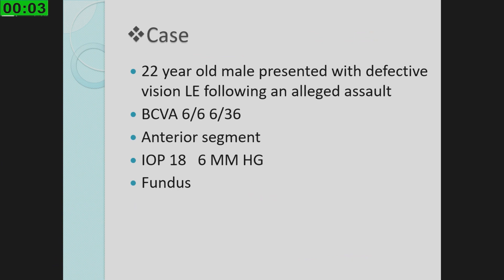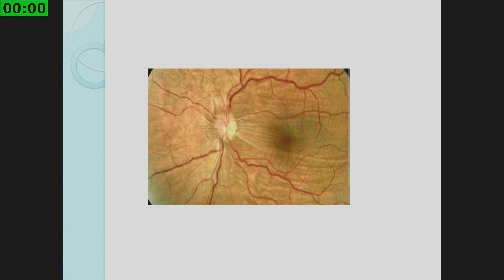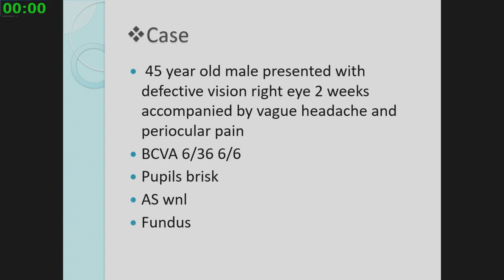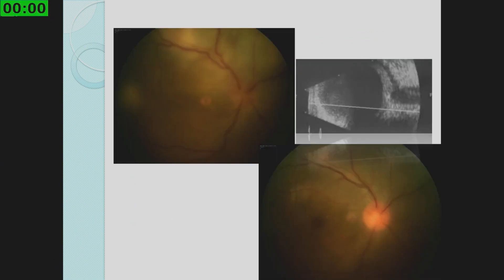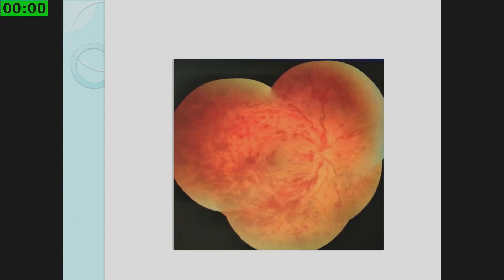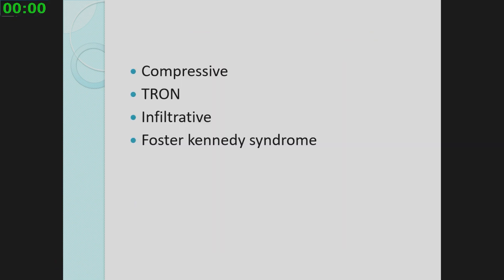In a 22-year-old male presenting with defective vision following assault, you can get traumatic optic neuropathy with decreased IOP — this is hypotonic maculopathy. For patients presenting with severe headache and periocular pain, always look at the rest of the retina. Disc edema with exudative retinal detachment — on ultrasound you get the typical T-sign — is a case of posterior scleritis. CRVO and CRAO can also present with disc edema. Always rule out compressive causes: thyroid ophthalmopathy, radiation retinopathy, infiltrative lesions, and of course the famed Foster-Kennedy syndrome.